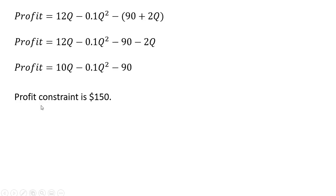Our profit constraint when we started this problem was $150, so we're going to set profit equal to 150. Setting our profit equation equal to 150, and now subtracting 150 from both sides, we have minus 240 over here now. And we're going to solve this for Q.